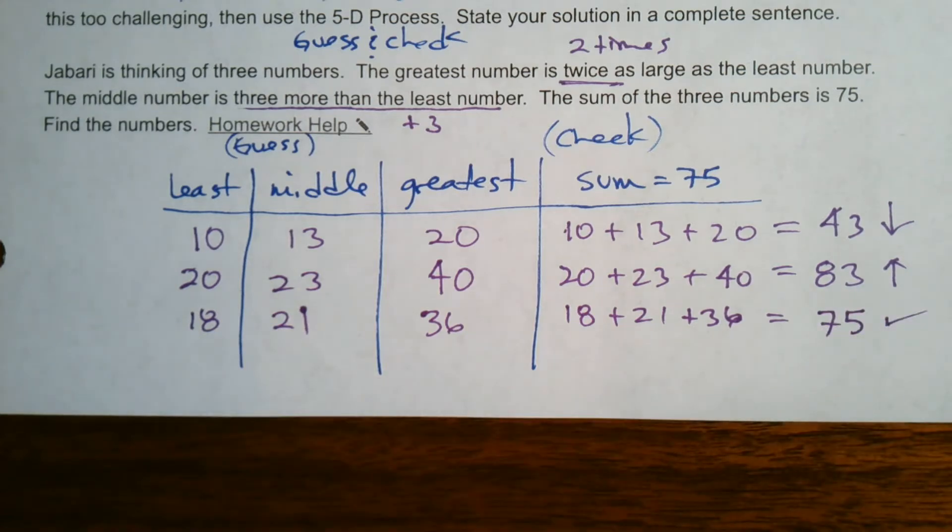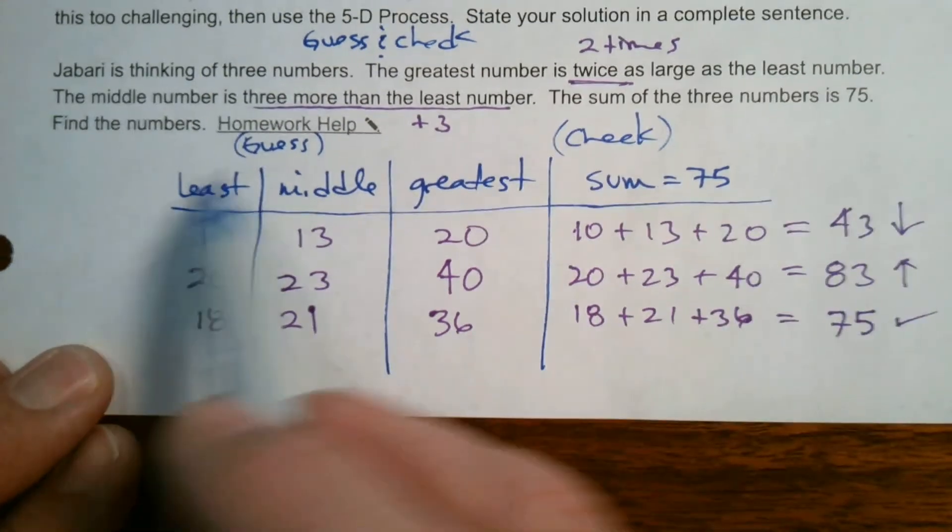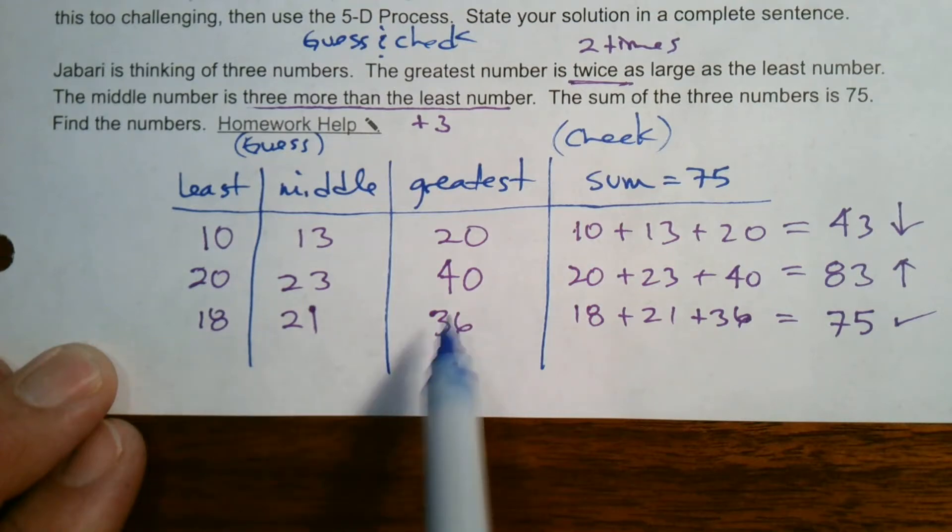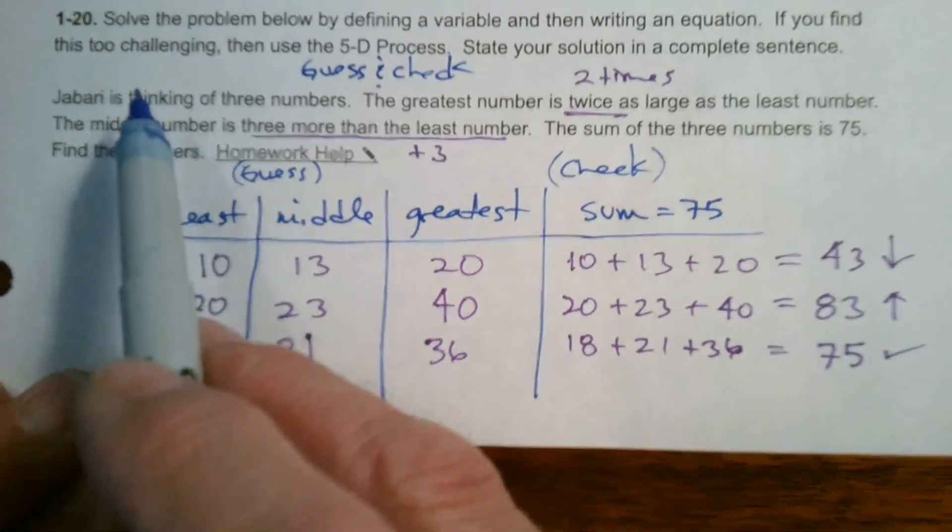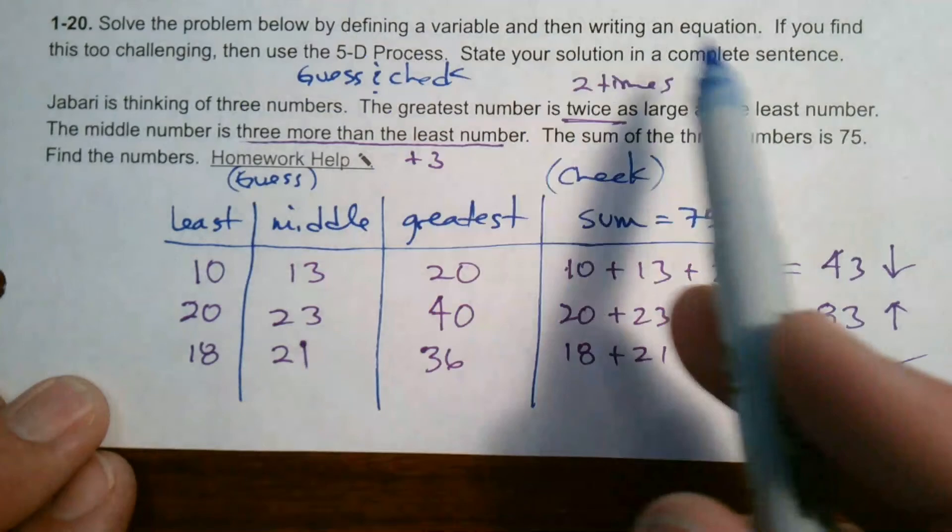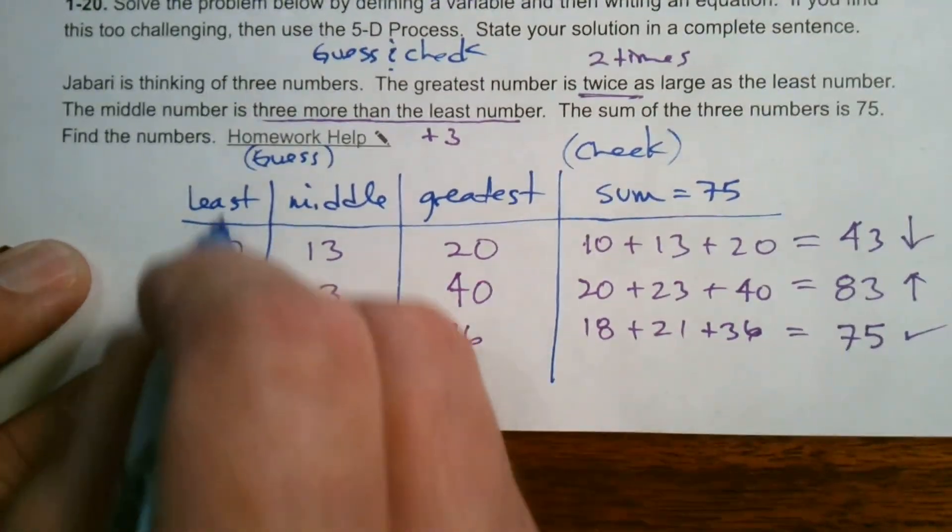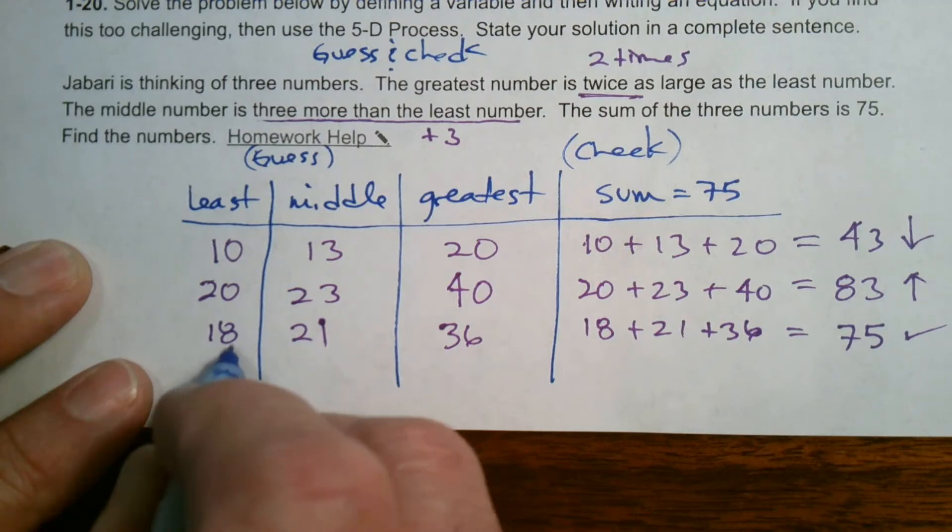That's the guess and check process. I found the numbers: 18, 21, and 36. But the problem also asked to define a variable and write an equation. Notice my initial guess was always the least, so I'll call that X.